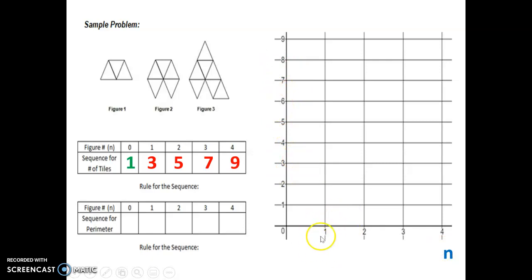So figure number one had three tiles. So plot a point there. Figure one, three tiles. Figure two, five tiles. Figure three, seven tiles. And figure four, nine tiles. Look at that. We can clearly see these are flowing in a linear trend. If you were to connect those points, you would have a line. Makes sense. This looks linear.